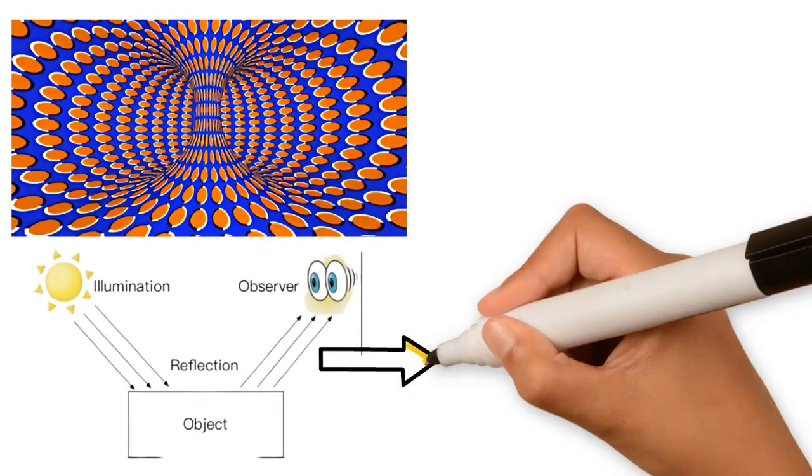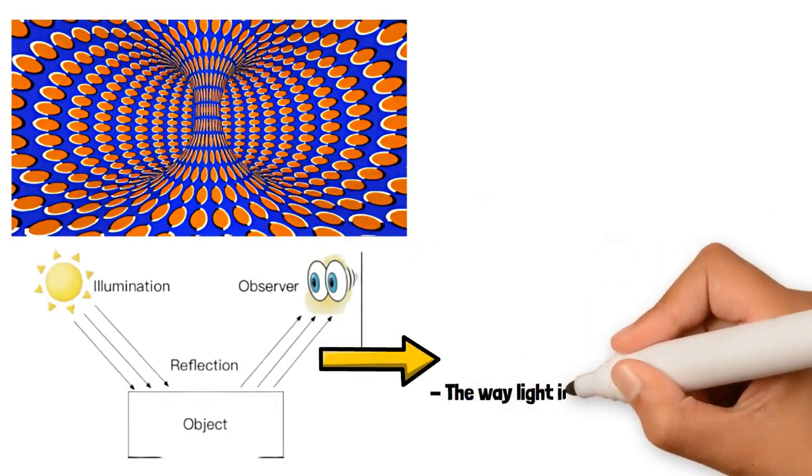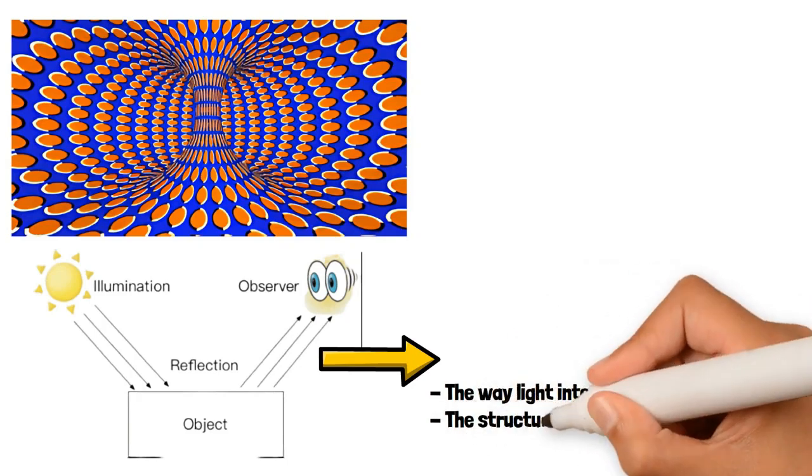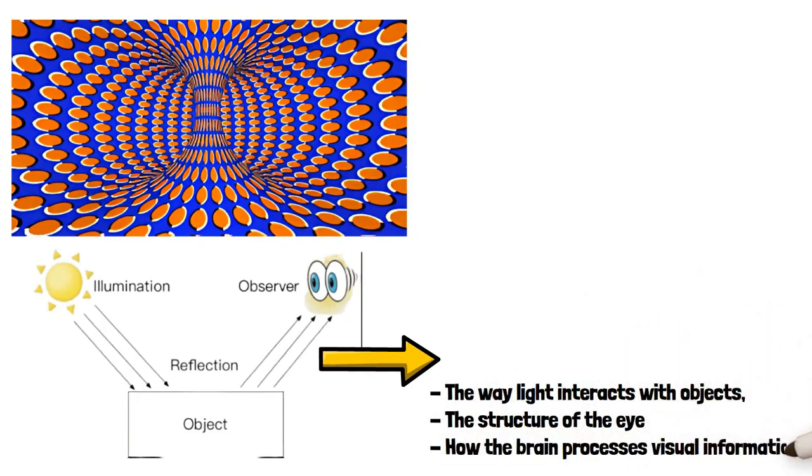Optical illusions can be caused by various factors, including the way light interacts with objects, the structure of the eye, and how the brain processes visual information.